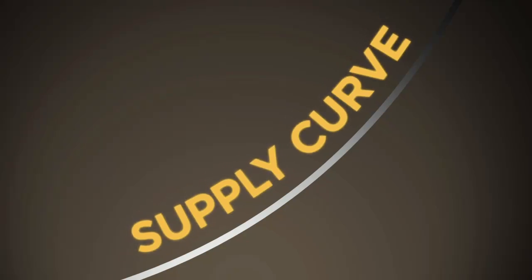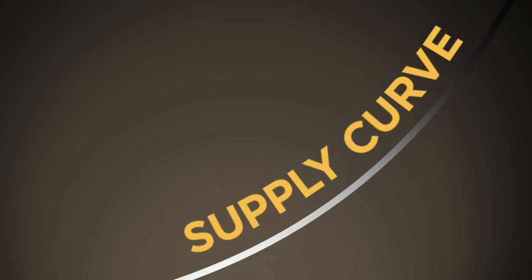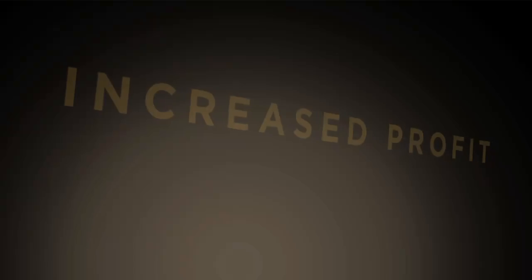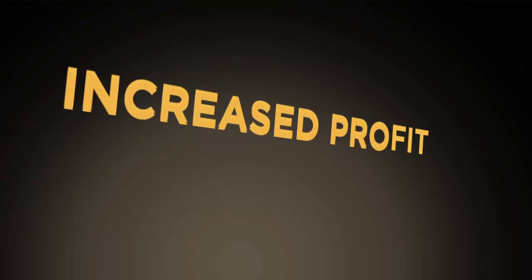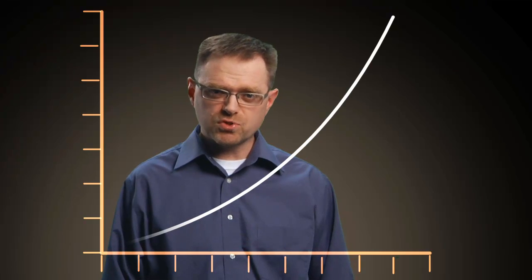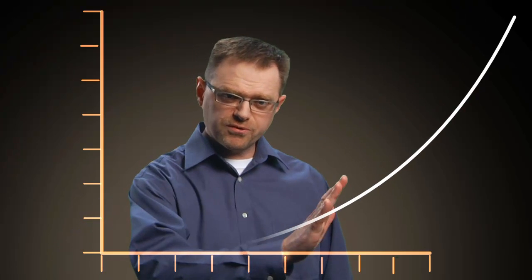This upward sloping line is called a supply curve. The supply curve is a helpful tool, but it is not static or unchanging — it shifts back and forth as the conditions in the market change. For example, if new technology allowed me to produce widgets at a substantially lower cost than my current production cost, the increased profit would cause me to increase my production of widgets. In this case, the original supply curve no longer tells the whole story. It must be shifted to the right to accurately reflect the new widget supply — the quantity of widgets supplied would be greater at each of the given prices.